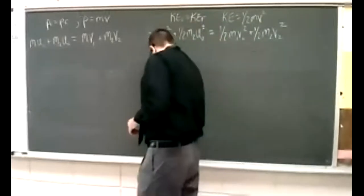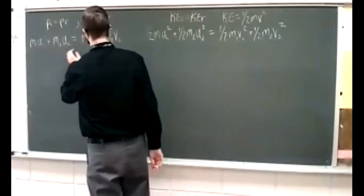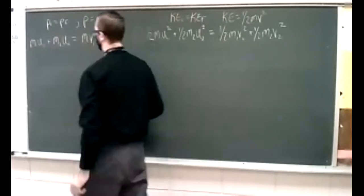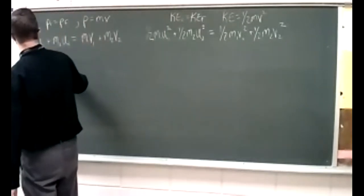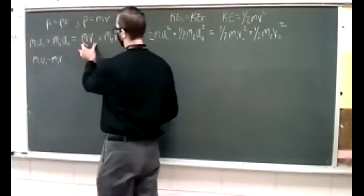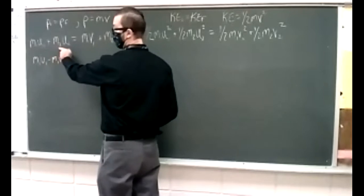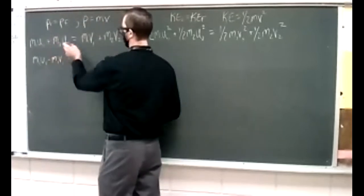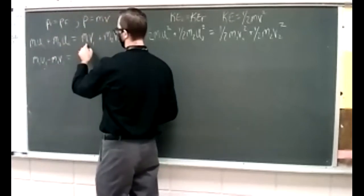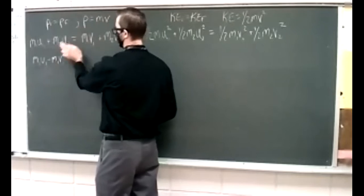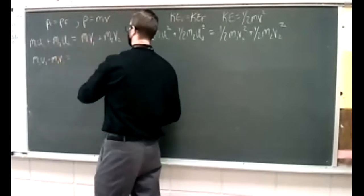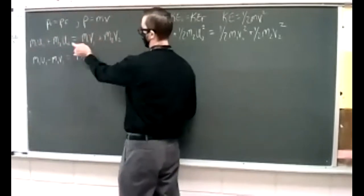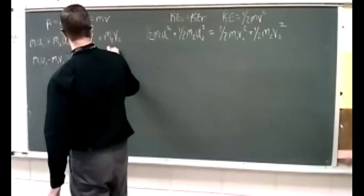Mathematically speaking, let's combine like terms. We want to get our M1 terms together on one side and M2 terms on the other. Subtracting the M1 final term from both sides gives M1 U1 minus M1 V1. Then subtracting M2 U2 from both sides gives M2 V2 minus M2 U2 on the right side.